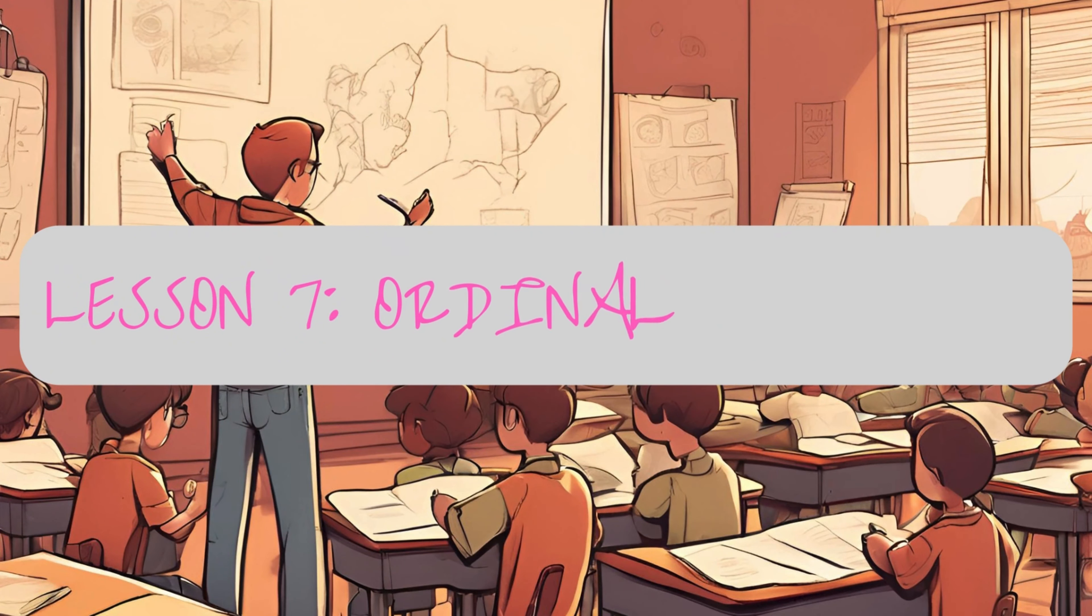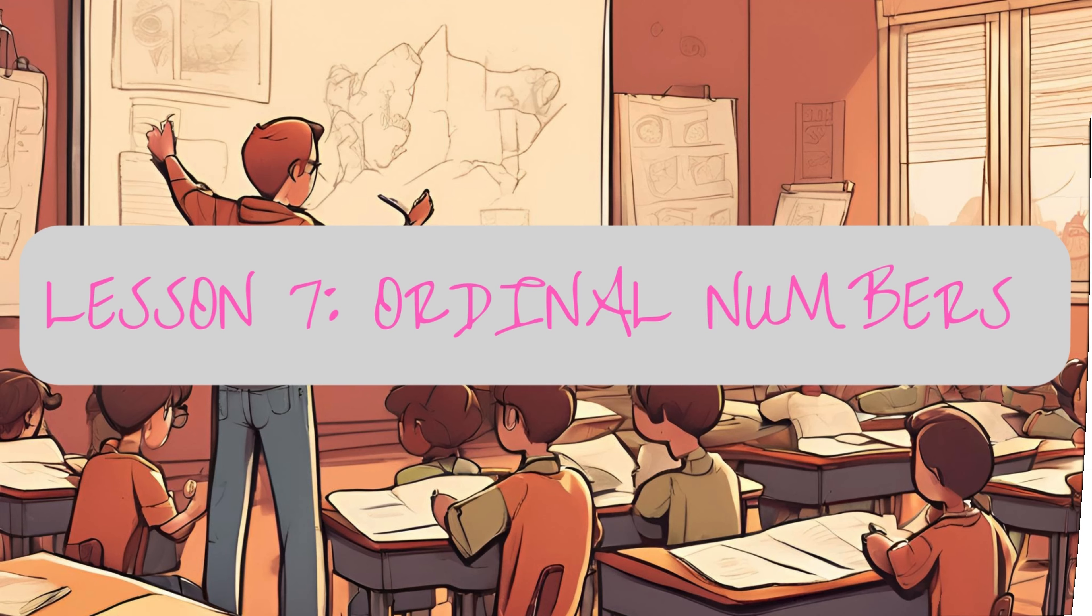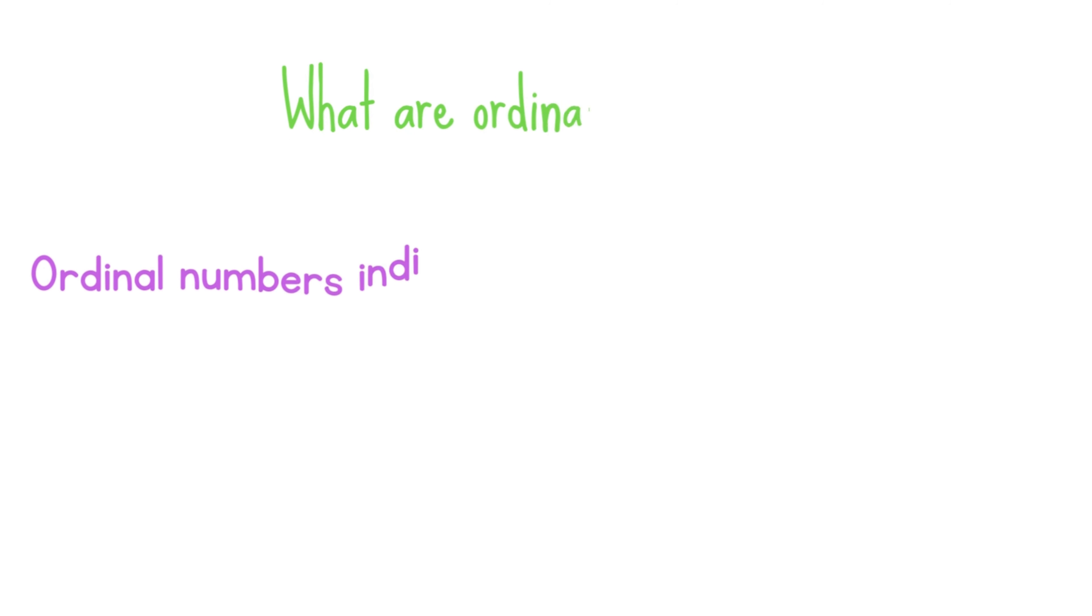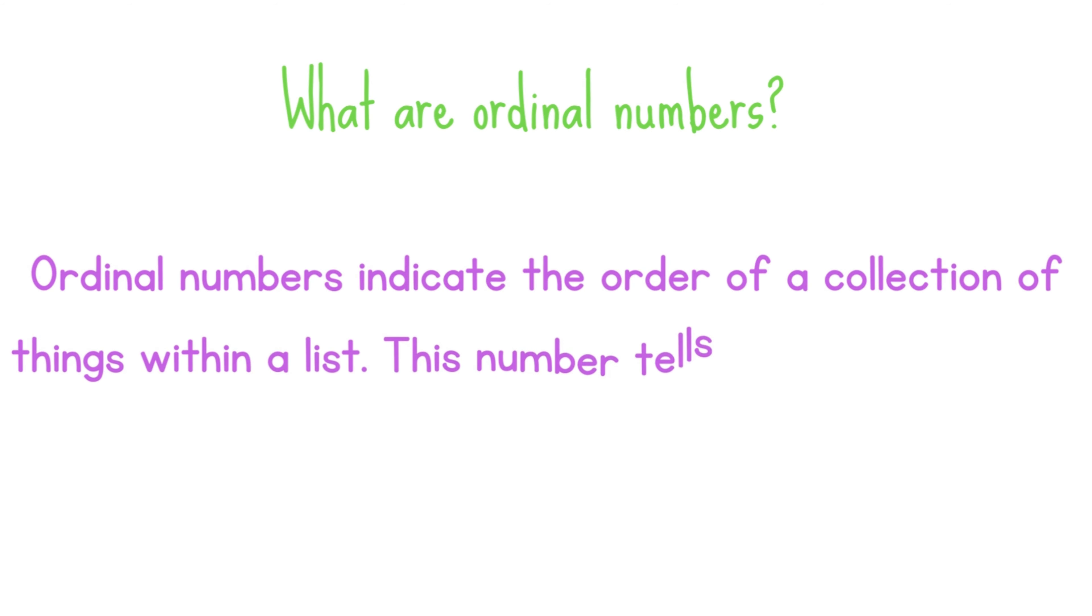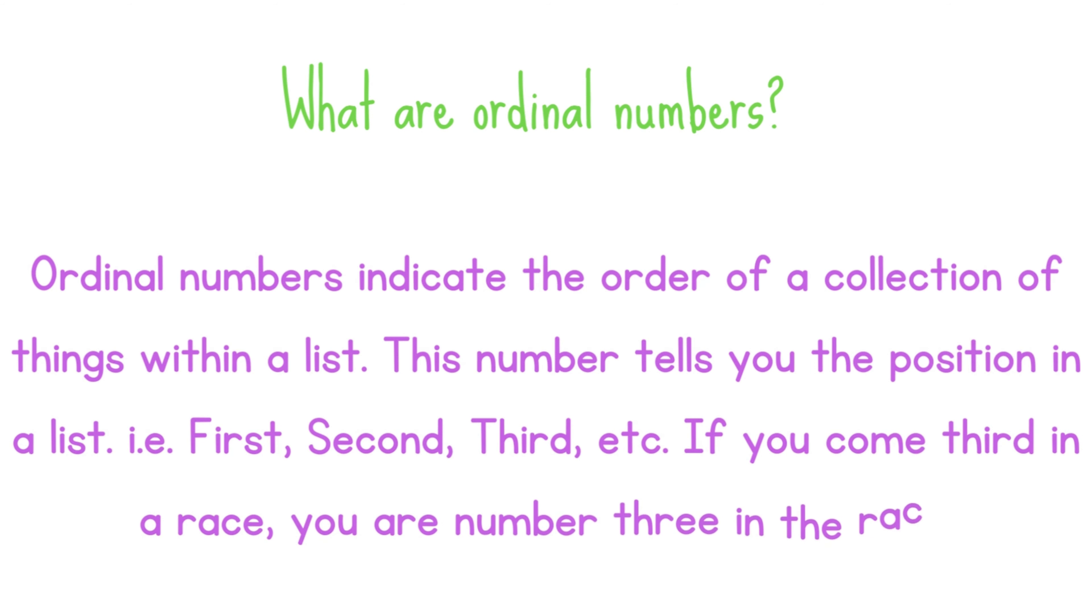Lesson 7: Ordinal Numbers. What are ordinal numbers? Ordinal numbers indicate the order of a collection of things within a list. This number tells you the position in a list. That is first, second, third, etc. If you come third in a race, you are number three in the race.